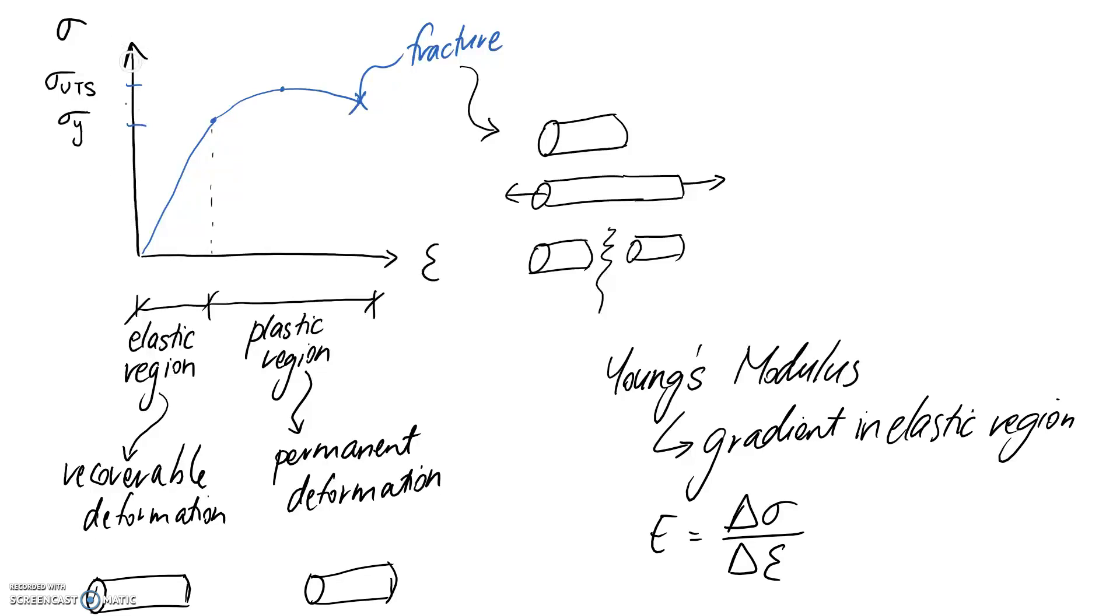Because stress is on our y-axis where we measure the rise, and strain is on the x-axis where we measure the run. Sometimes people draw it like this to symbolize the fact that it's the gradient along this triangle that you can draw.